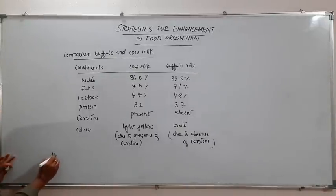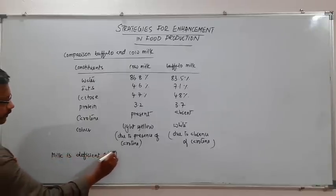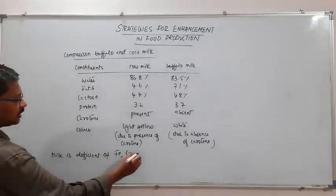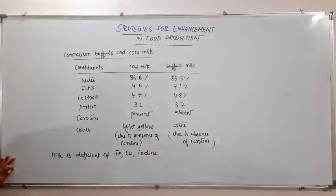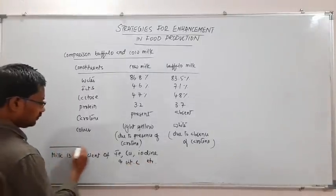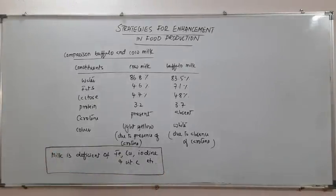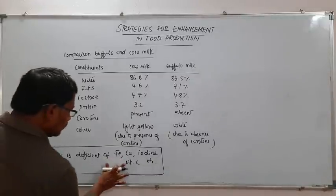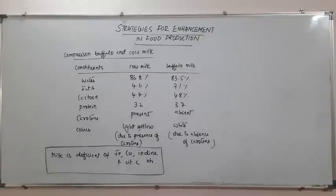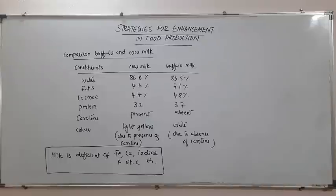Milk is deficient in iron, copper, iodine, and vitamin C. These are substances not present or insufficient in milk.